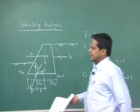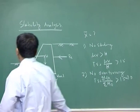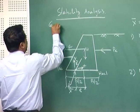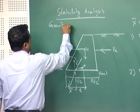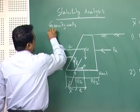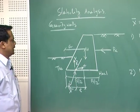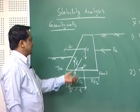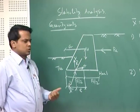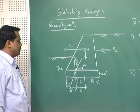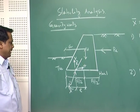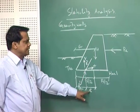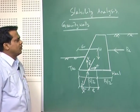These are the four stability analysis checks for a gravity wall. The disturbing force is the active earth pressure due to the retained soil, and the stabilizing force is the self-weight. You find the resultant force and its distance x-bar from the toe. Once you get x-bar, you can find the eccentricity e and check all the factors of safety.